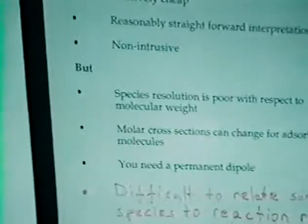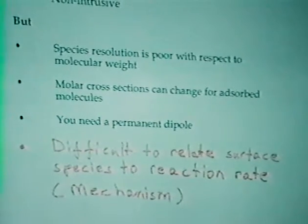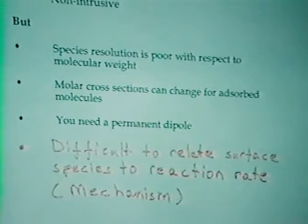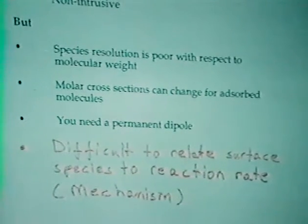There are other problems. One has to always look at each technique with a critical eye. Species resolution is poor with respect to molecular weight. That means a CH2 group will look like a CH2 group whether it's a C4 hydrocarbon or C24 hydrocarbon. Molar cross-sections can change for adsorbed species in the vicinity of the surface. Of course you need a permanent dipole. But perhaps the most disturbing part is the last one to which Vladimir referred.